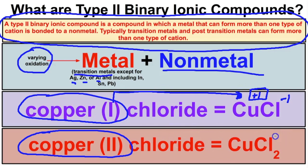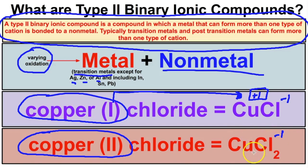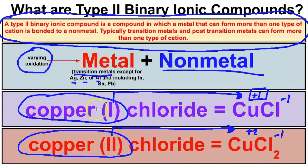In copper 2 chloride, chloride has a negative 1 charge and there are 2 of them, so the total charge on the right-hand side is negative 2. Because we only have one copper ion, it must have a positive 2 charge — that is why this is called copper 2. The Roman numeral in parentheses tells you what the charge of that metallic ion is.